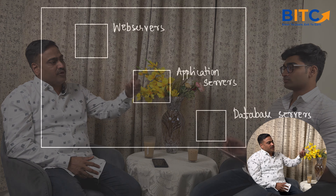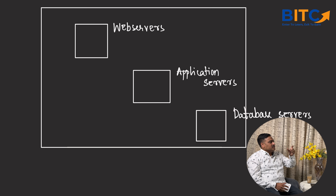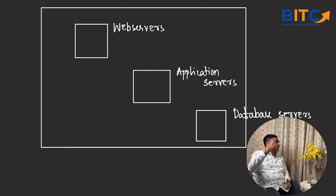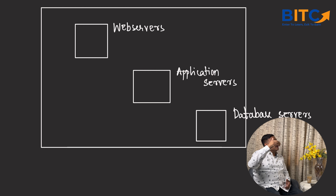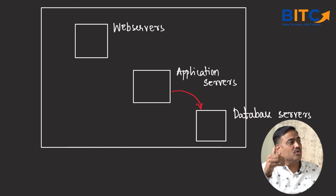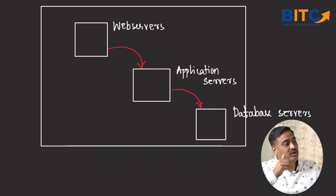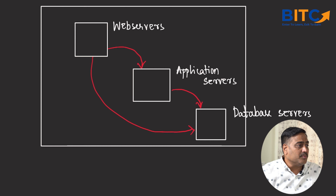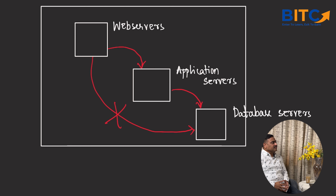You can put your front end in one subnet, your back end in a different subnet, and your application layer in yet another subnet. You can then restrict traffic so that the database server is only reachable via the application server, and the application server is only reachable via the web server. Direct access from the web server to the database server should not be allowed — all configurable through NSGs.